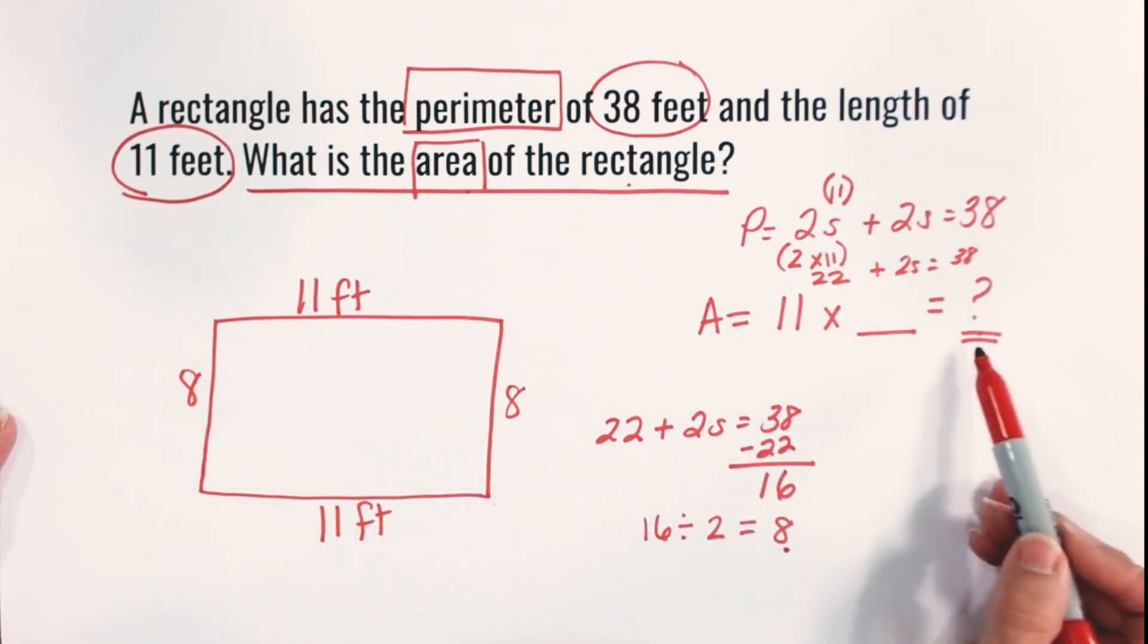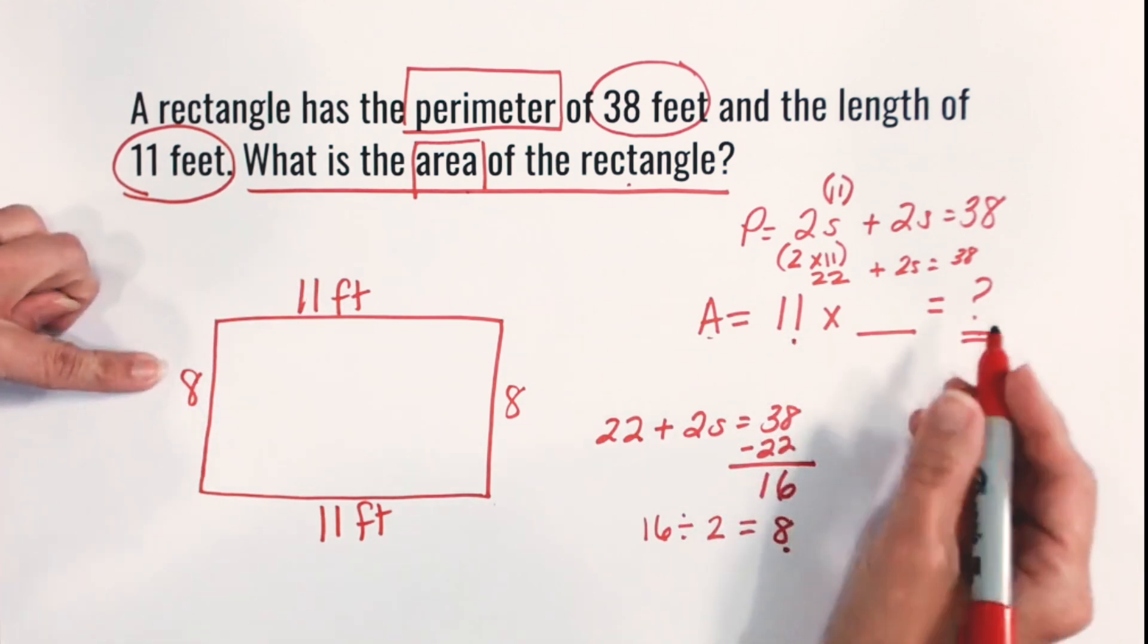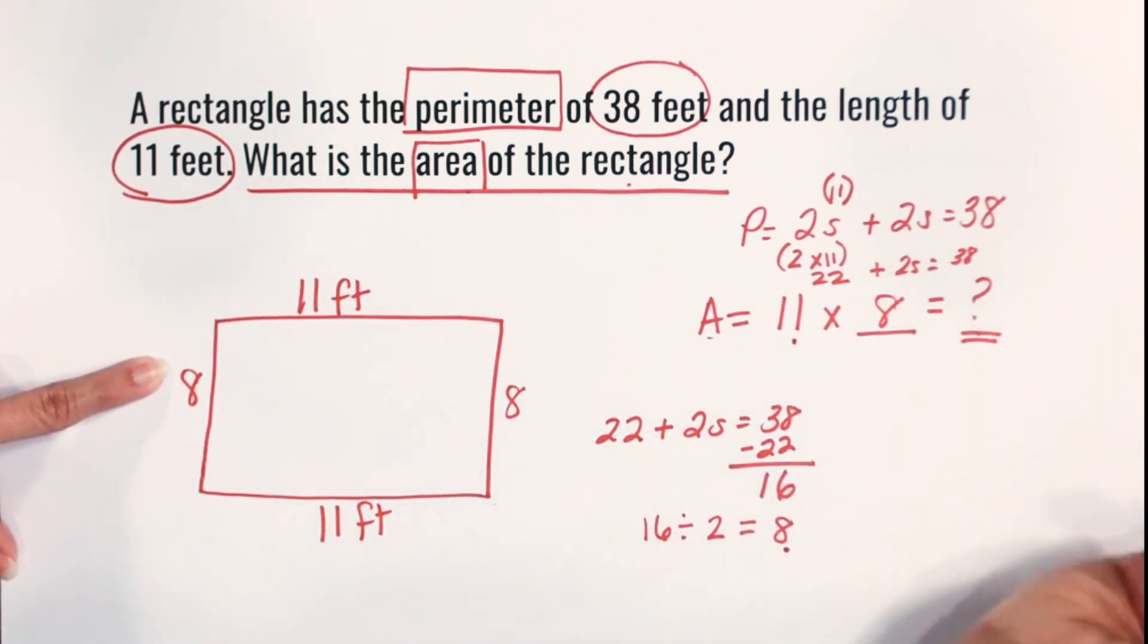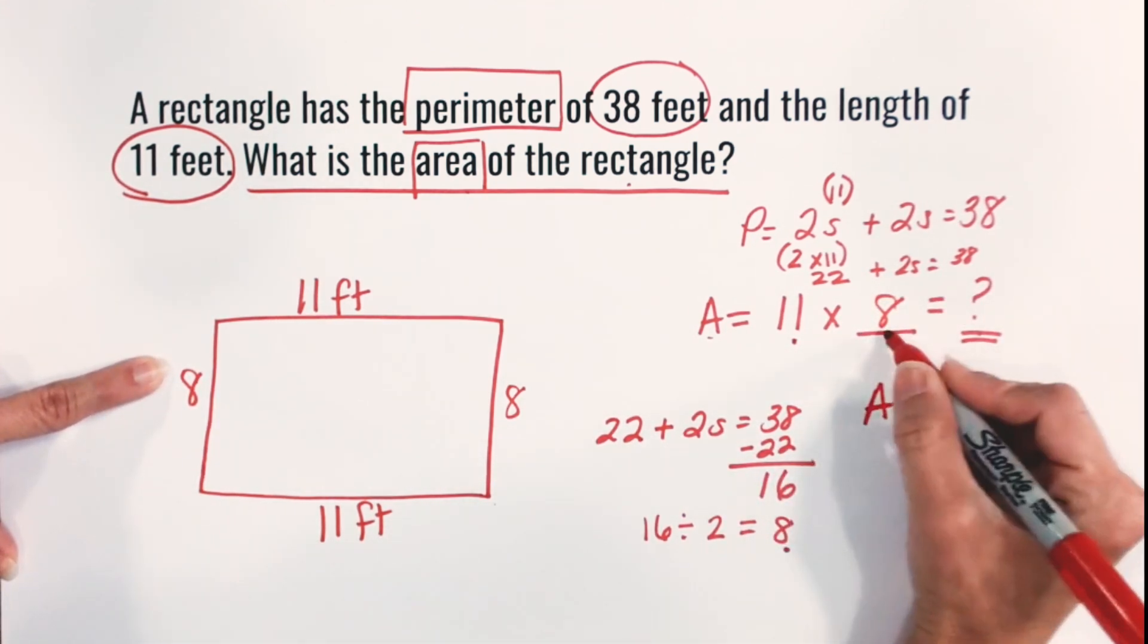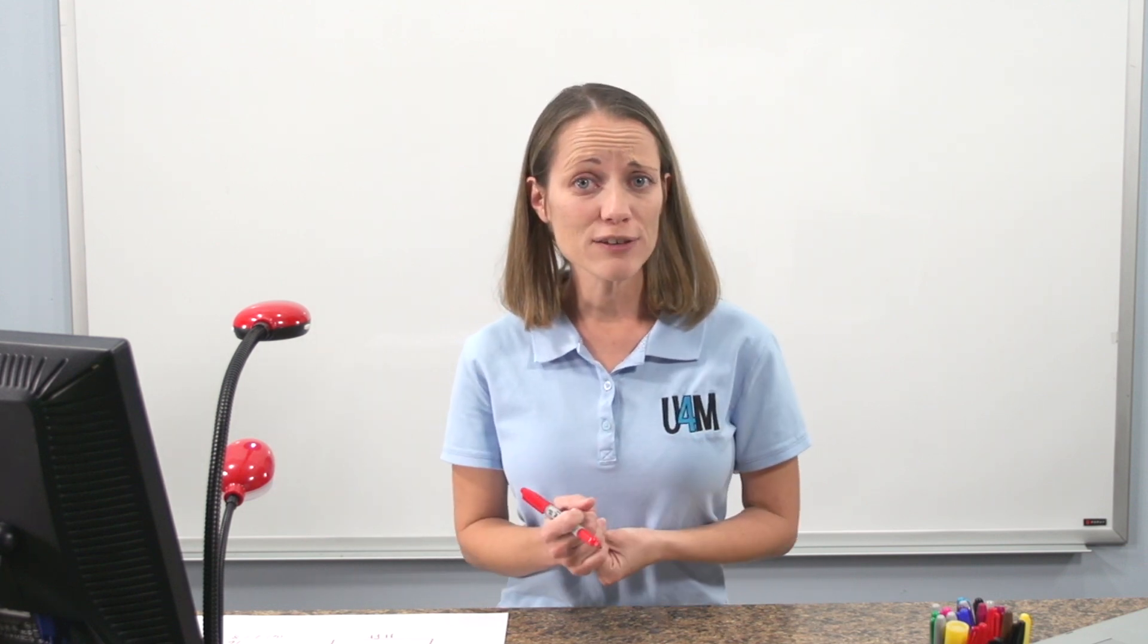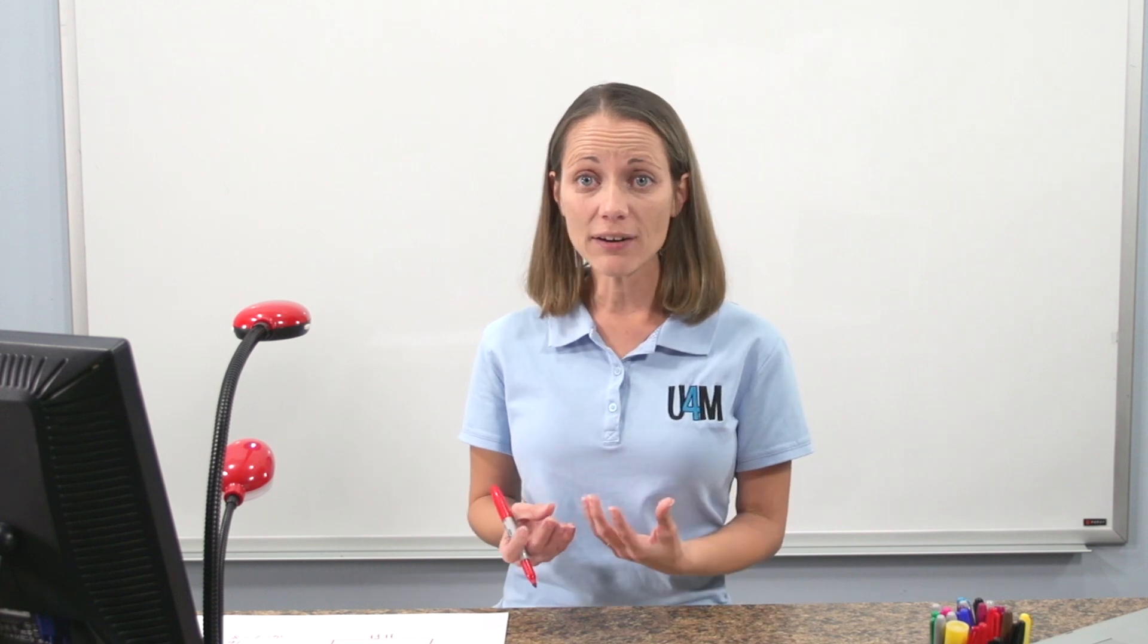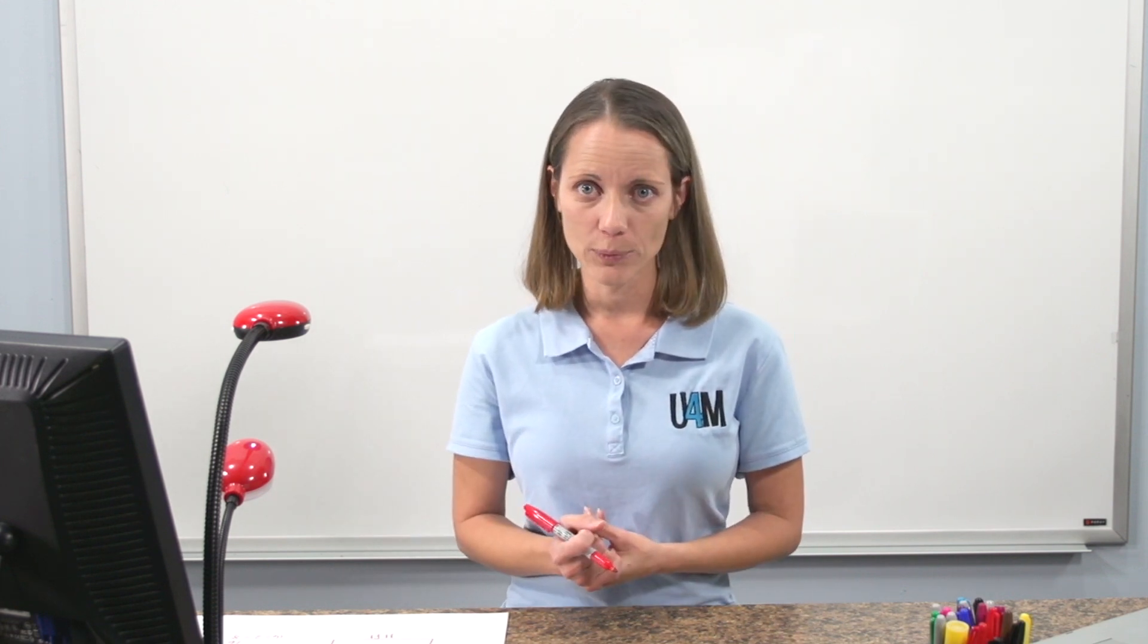Well, we already wrote out our area formula. Area is a length times width or 11 times 8 in this case. So that means the area of this shape is 88 square feet. So that was a lot of steps. Solving this mystery, we have to use a lot of those different clues and put them inside of our formulas in order to figure out what we're looking for. In that case, we had to first find the missing side using the perimeter formula, then apply that into our area formula to find that area we were looking for.